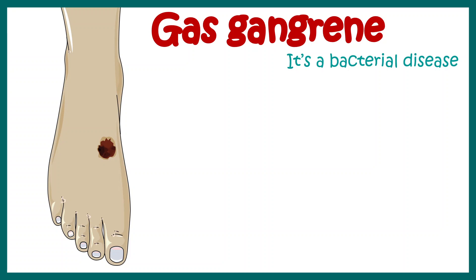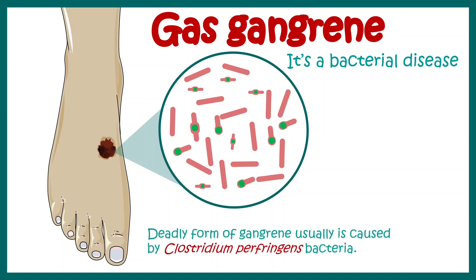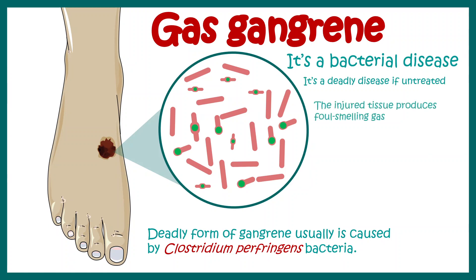In this video, we'll talk about gas gangrene. This is a bacterial disease which is caused by the bacteria Clostridium perfringens. If this disease is untreated, then it might lead to severe symptoms. The injured tissue in this disease produces foul-smelling gas — that kind of justifies the name, gas gangrene.